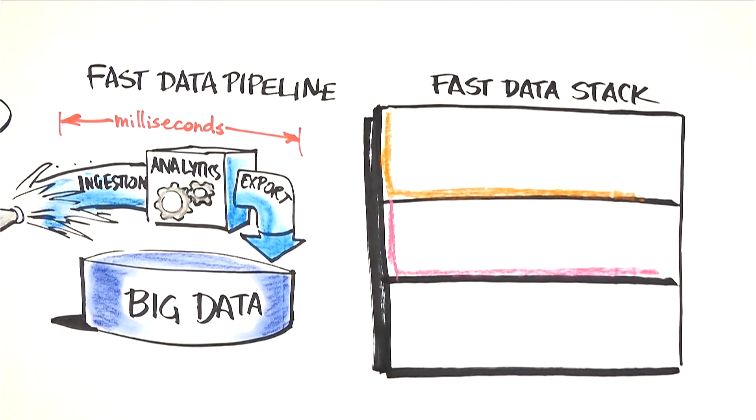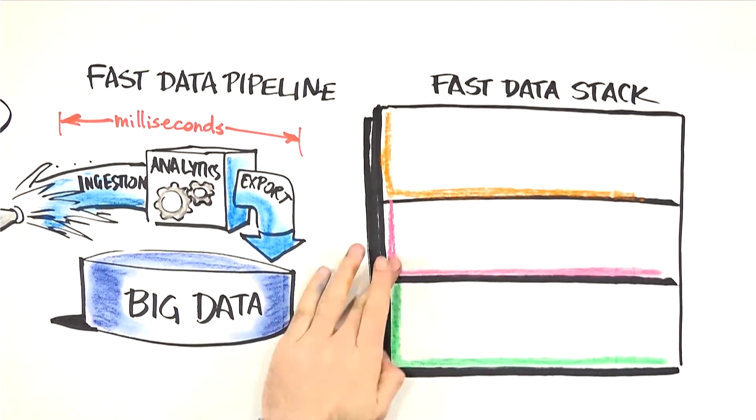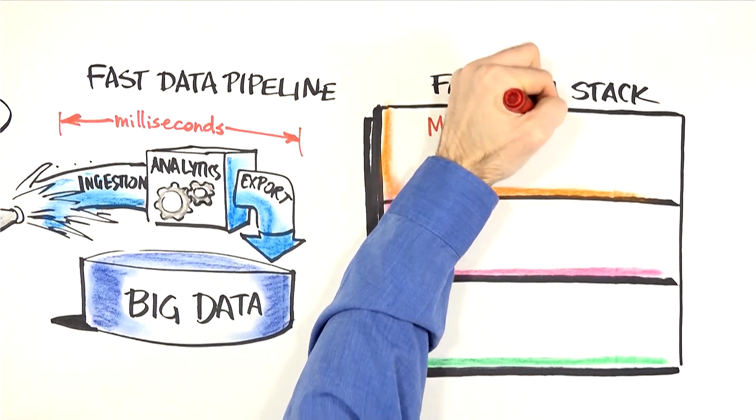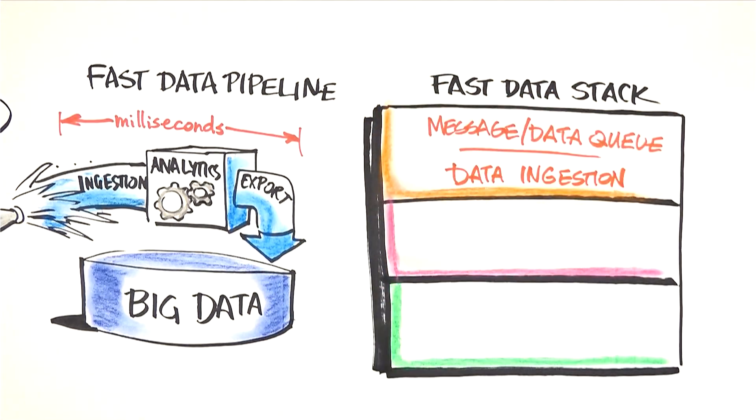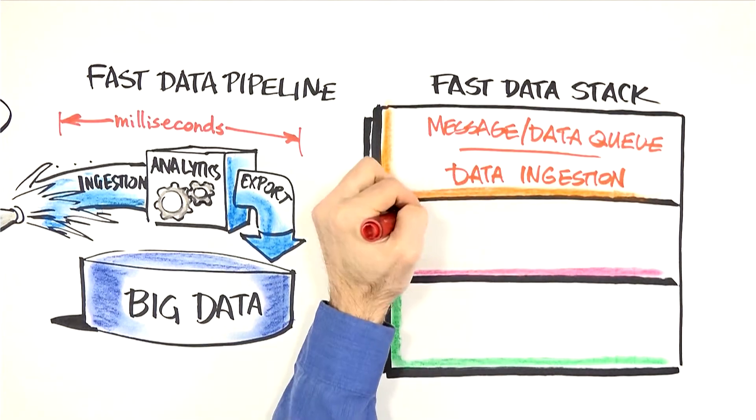The fast data stack has three architectural levels. Ingestion marks the first point at which data can be transacted against, applying key functions and processes to produce value with the data.